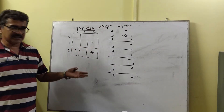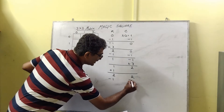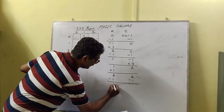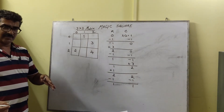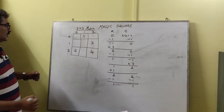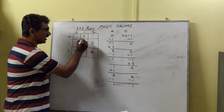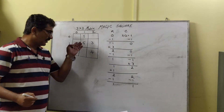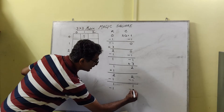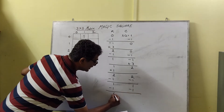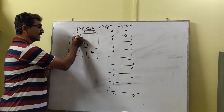Since 4 is not a multiple, we subtract 1 from both row and column. Both new indices are valid: row = 1, column = 1. So number 5 goes at index (1, 1). Again, 5 is not a multiple, so subtract 1 from both: we get row = 0, column = 0. So number 6 is inserted at index (0, 0).